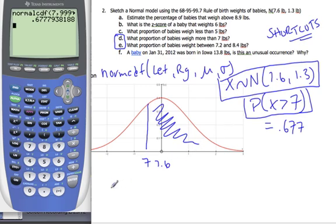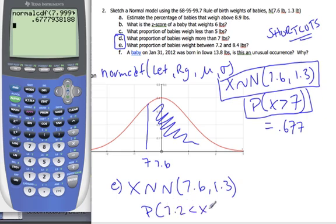I'll do it again for E part. Okay, so I know that X is a normal, and it is going from 7.6 is my mean, standard deviation 1.3. I want to find the probability that I am between 7.2 less than X, less than 8.4.